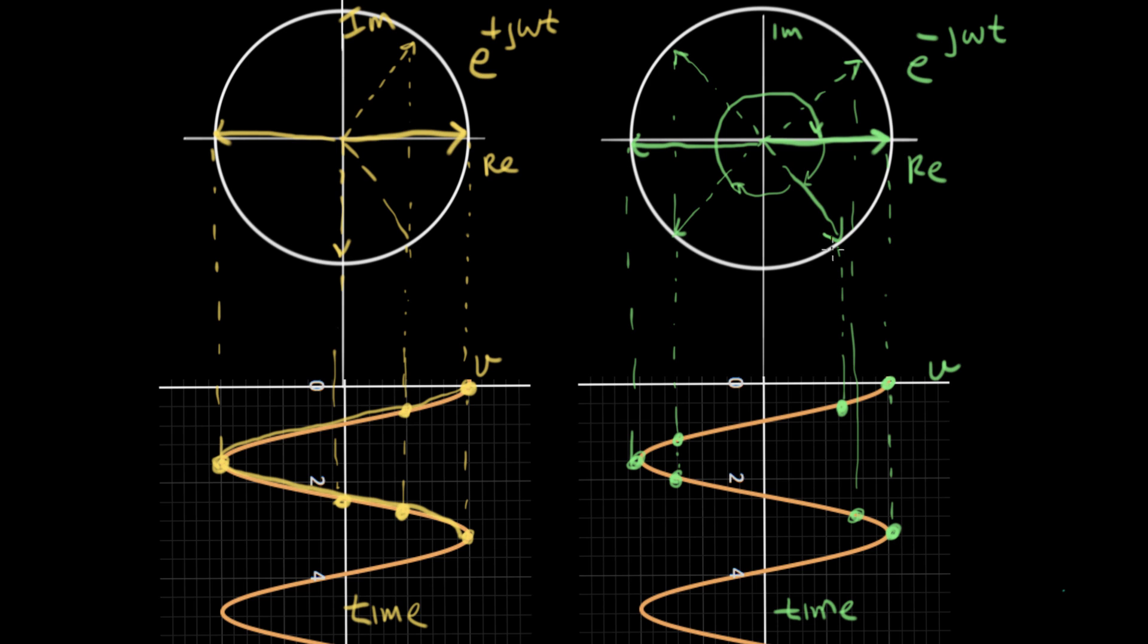What happened here is we took two different vectors rotating in opposite directions. This one clearly had a positive frequency because it was going counterclockwise. This one had a negative frequency because it's going clockwise. Both of them carved out the exact same cosine wave when we got done.